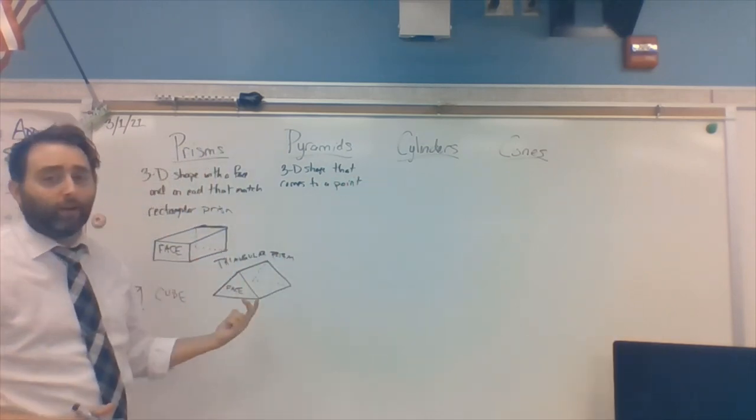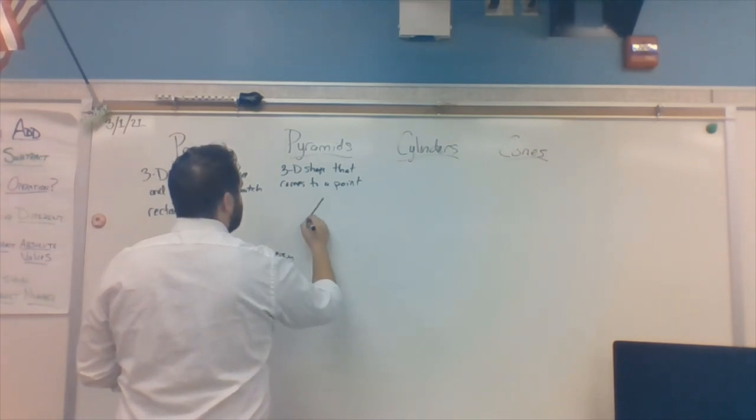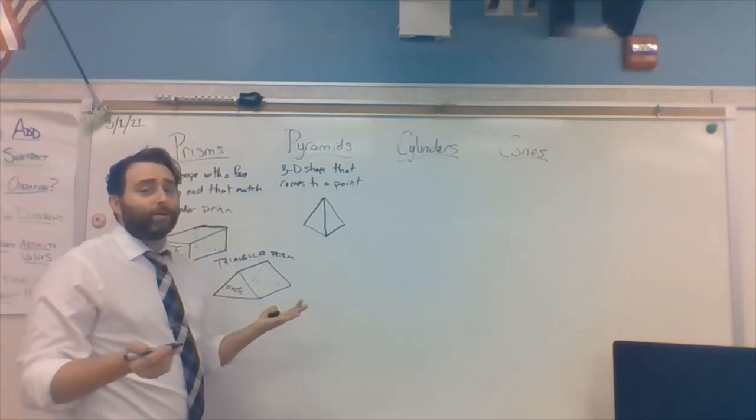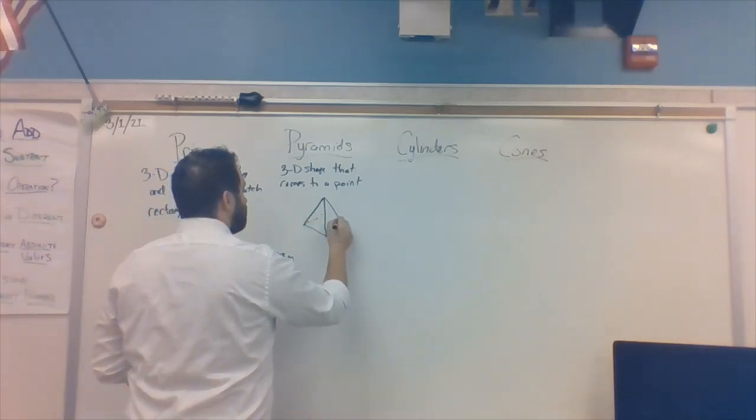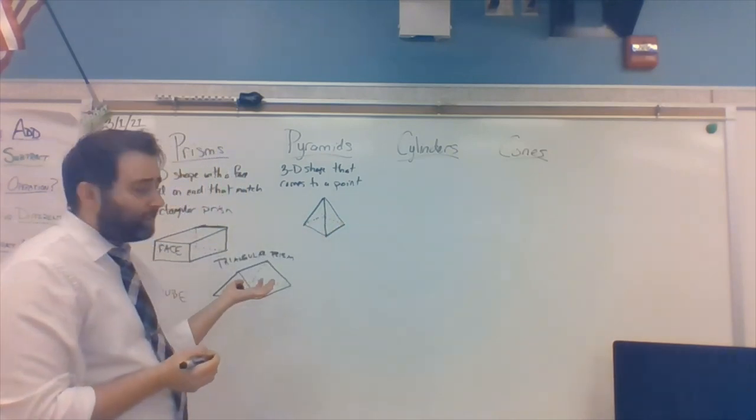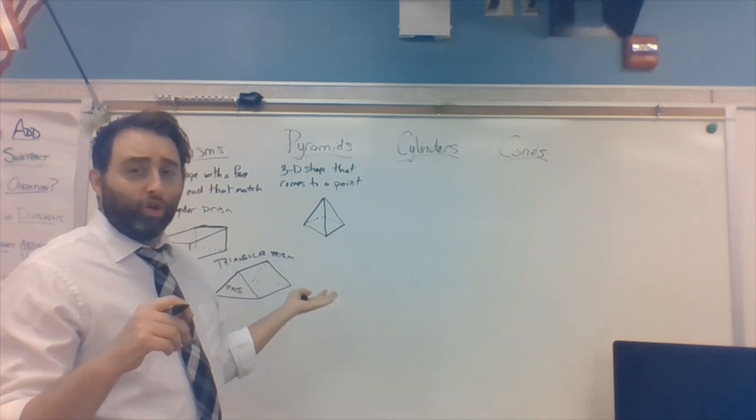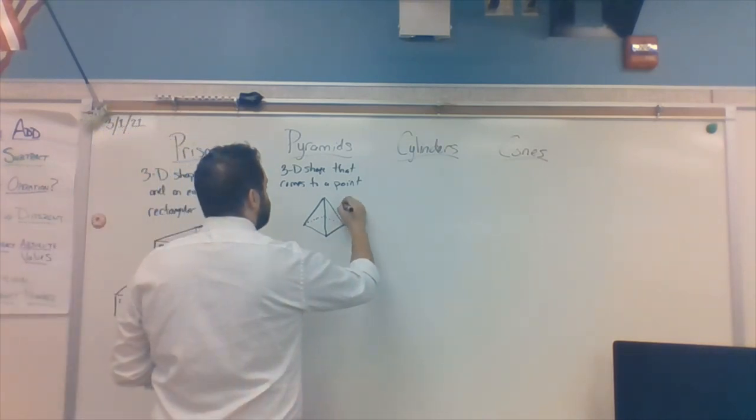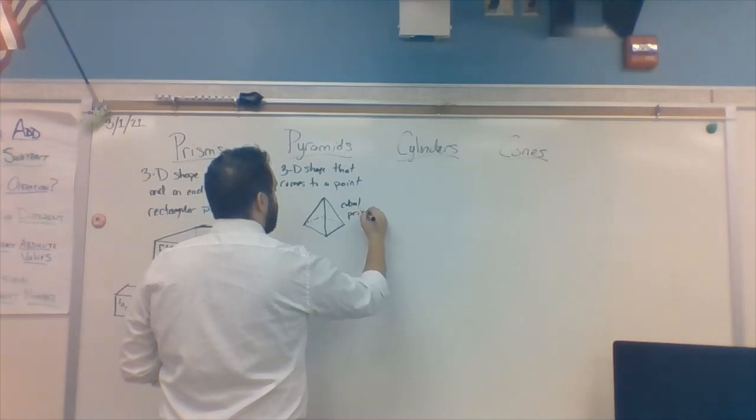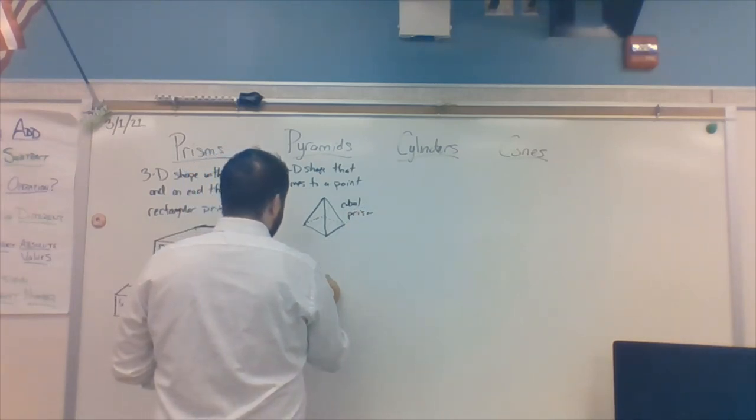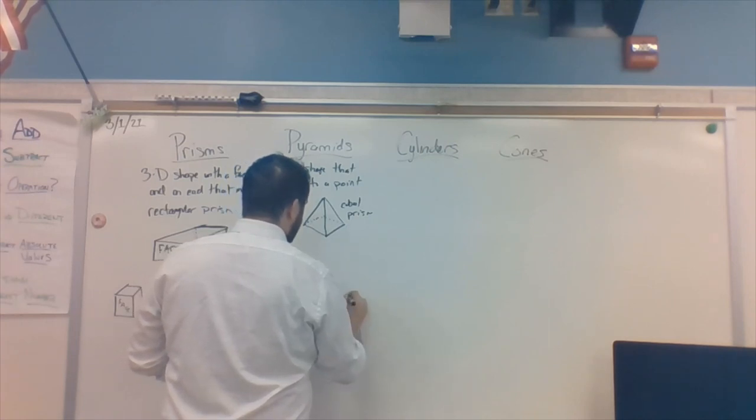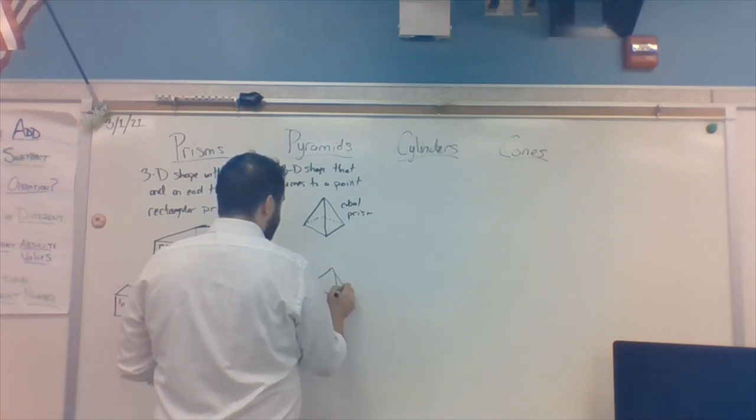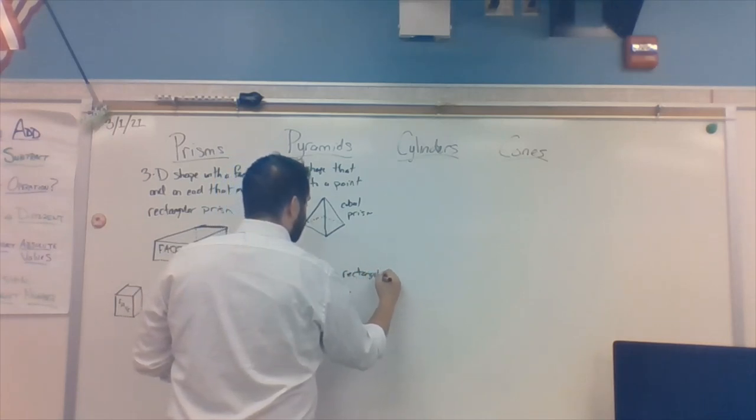And just like over here, that pyramid in Egypt I just drew, the base, you may not be able to see, but the base is a square pyramid. It's called a square pyramid. I can also draw a rectangular pyramid. I'm making this one spot longer than the other. And then they still all come to a point. And then you can see here, my base is a rectangle. This is a rectangular pyramid.